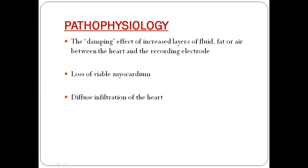Air can also be a cause — for example, if a pneumothorax is present and the lung is covering the anterior part of the heart, that can dampen the voltages and produce a low voltage ECG. Another cause is loss of viable myocardium, which can be seen in cases of massive myocardial infarction.